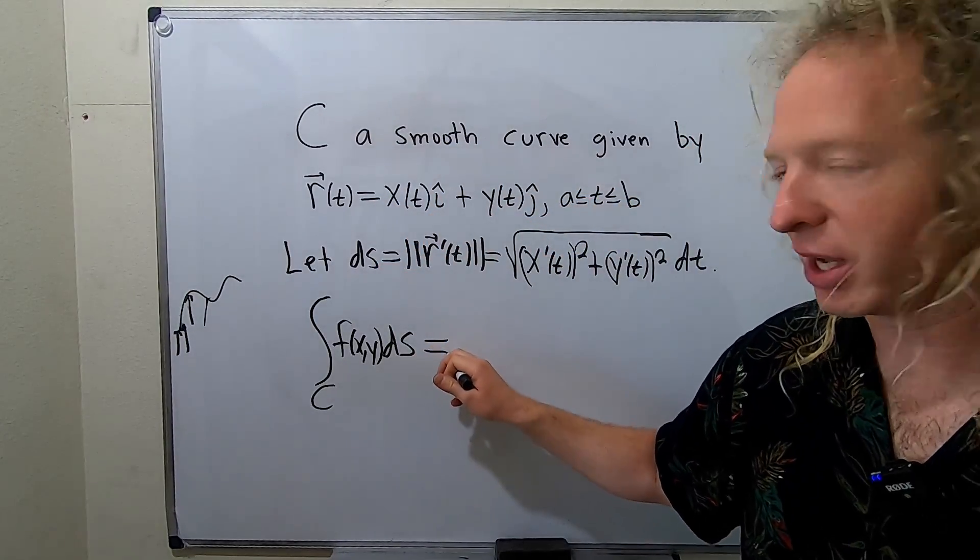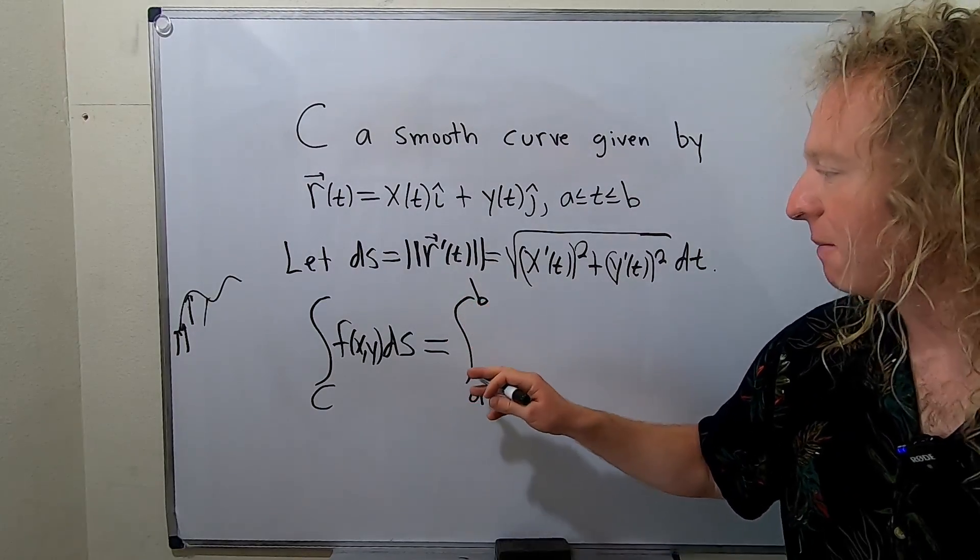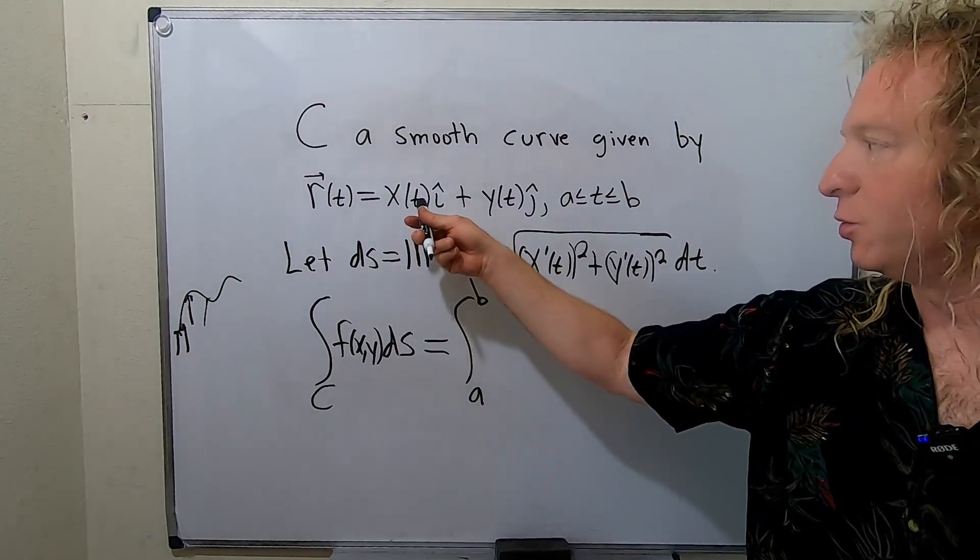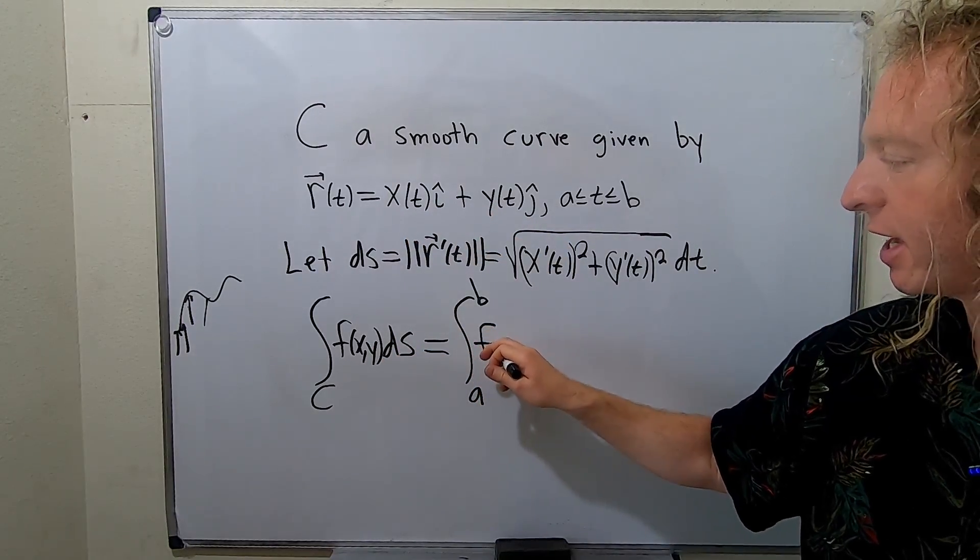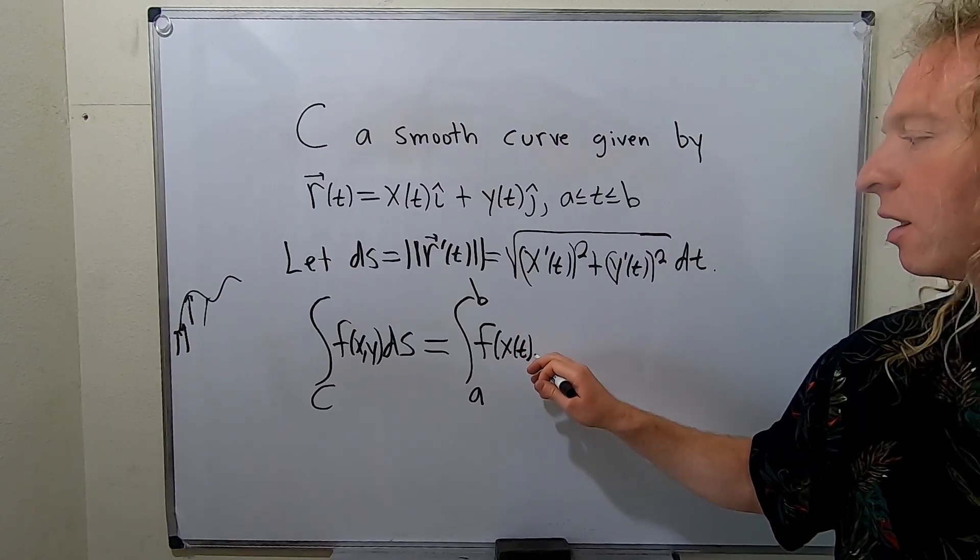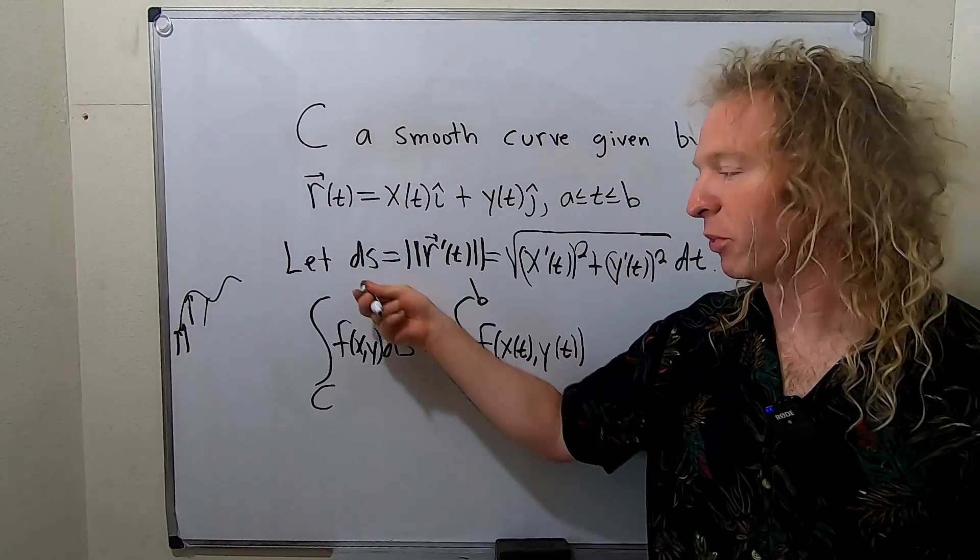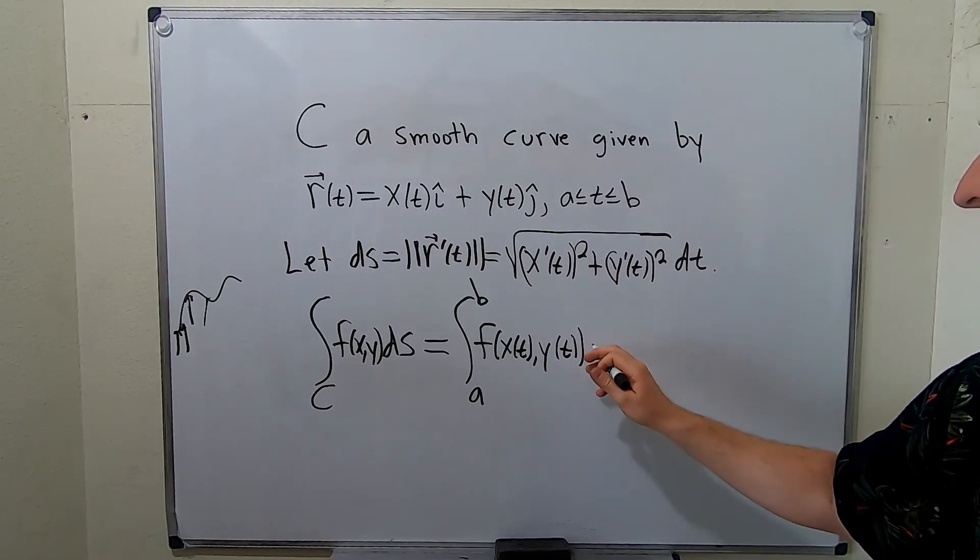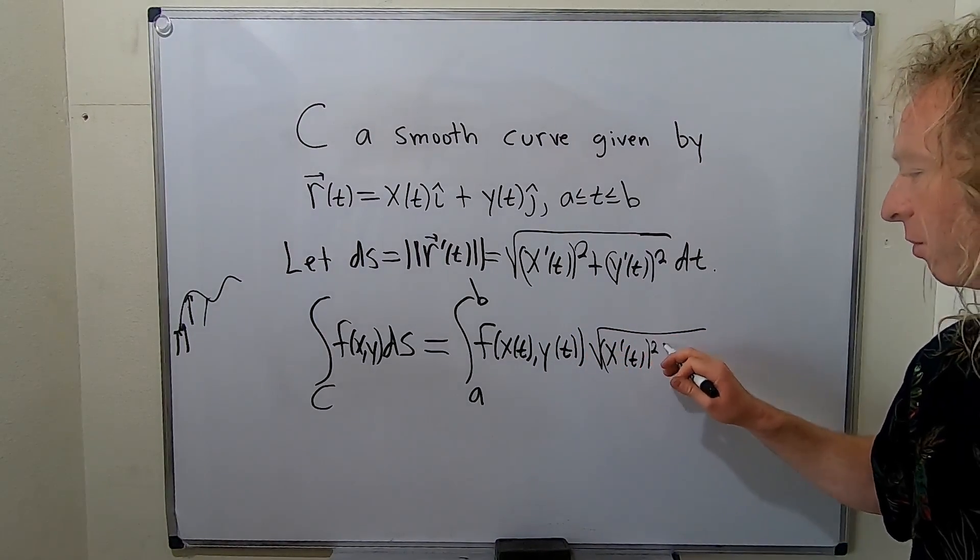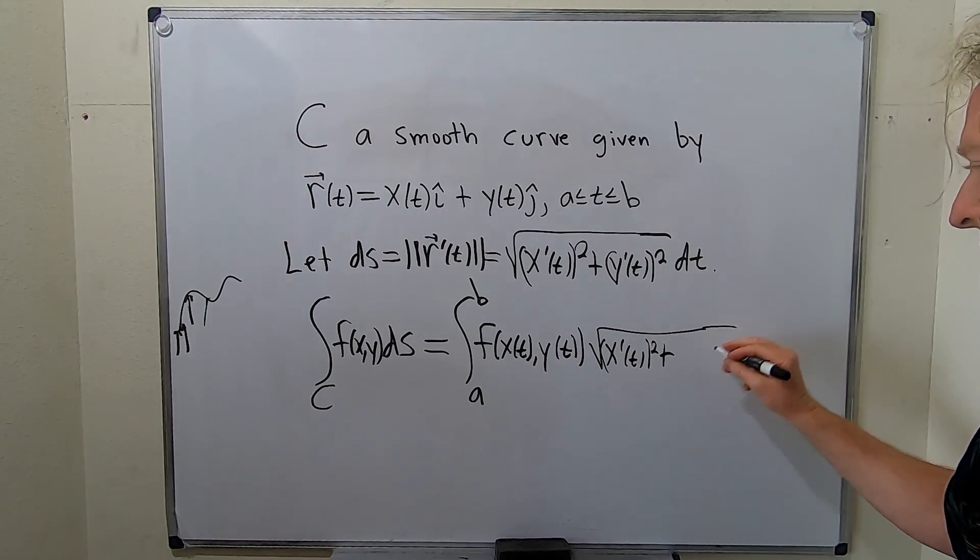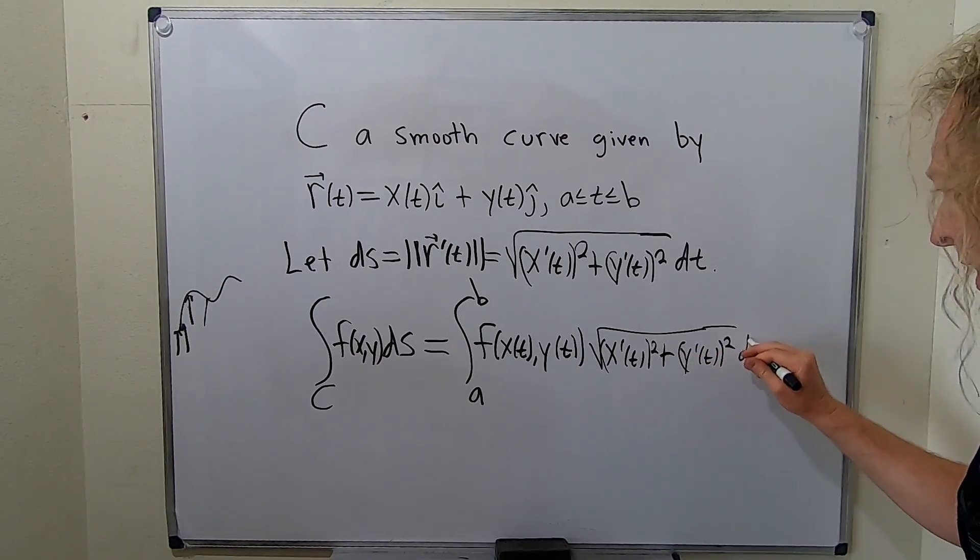So you can rewrite this as follows. This is the definition. So we're going from a to b. And basically what you do is you plug in the components into your function: f(x(t), y(t)). And then it's ds. But we know what ds is. So square root of x'(t) quantity squared plus y'(t) quantity squared. So it's a pretty wicked formula. And this is it.